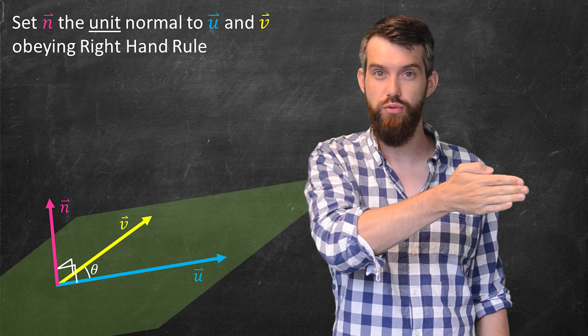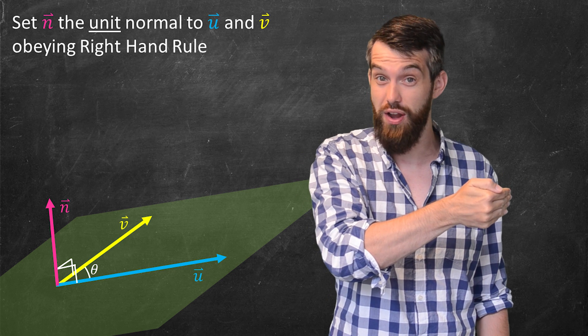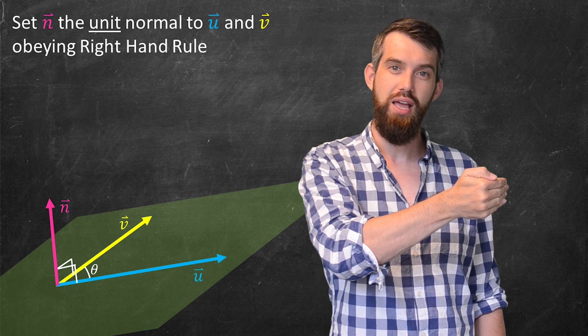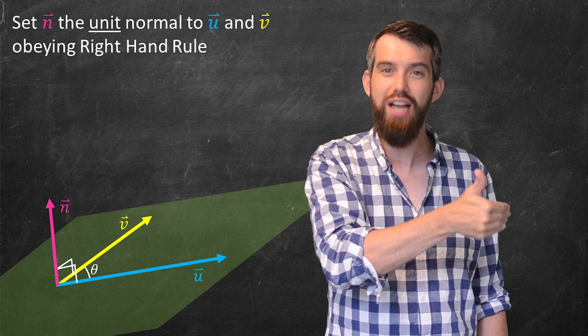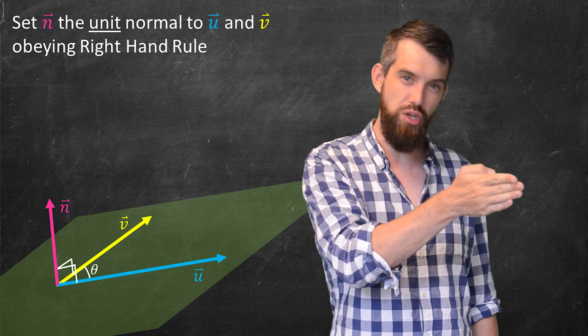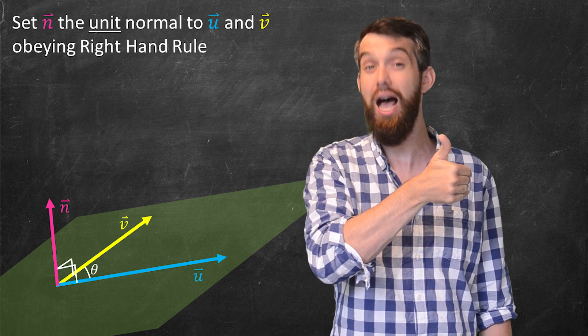So your fingers point in the direction of the first vector, and then what they do is they curl towards the second vector, to the v vector in this case. They point along u and they curl to v. And then if you stick your thumb up, your thumb is going to tell you the direction of the normal that we're talking about. So in our specific example, you have your u, you have your v, and it curls up to become this normal which is upwards in our case.